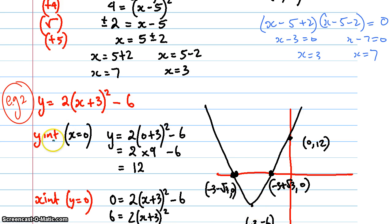I'm now going to find the y-intercept. I make x equals 0 and I just solve the equation. So 0 plus 3 all squared, that's 9, and then multiplied by 2, that ends up being 18, and then I'm minus 6 from that, which is 12. So I pop that in on my graph, which is over there.